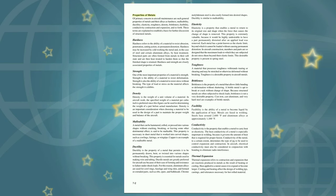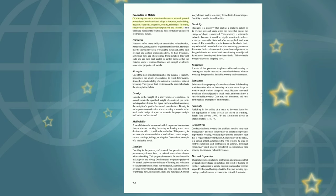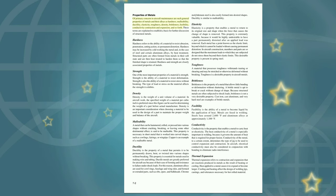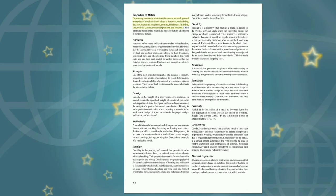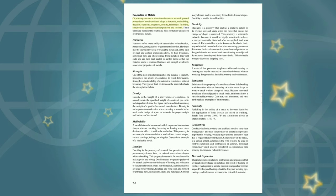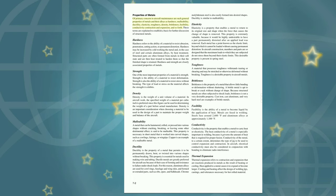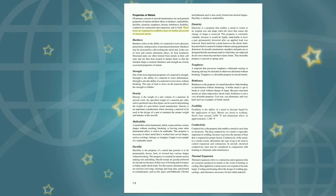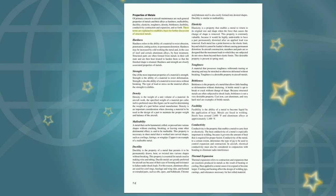Properties of metals: Of primary concern in aircraft maintenance are such general properties of metals and their alloys as hardness, malleability, ductility, elasticity, toughness, density, brittleness, fusibility, conductivity, contraction and expansion, and so forth. These terms are explained to establish a basis for further discussion of structural metals.